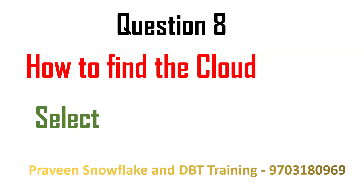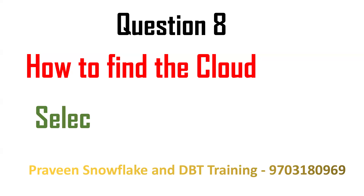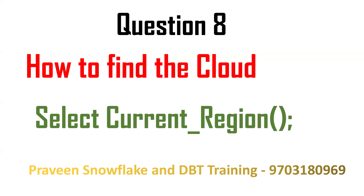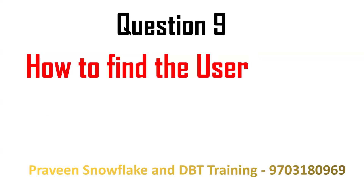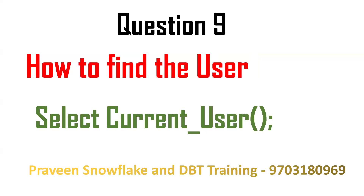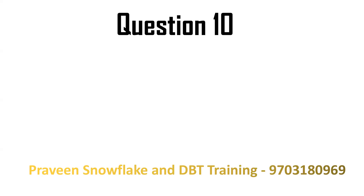Next question: how to find the cloud? Remember, Snowflake supports multi-cloud — it can support AWS (Amazon Web Services), Microsoft Azure, and GCP. To figure out which cloud you are using in your current project, go for SELECT CURRENT_REGION(). By this, we can figure out what cloud we are working on. Next: how to find the current user? There will be multiple users, and to find your username, go for SELECT CURRENT_USER().